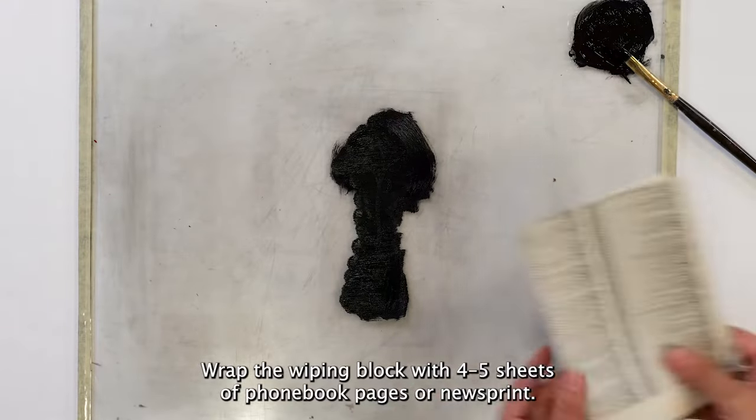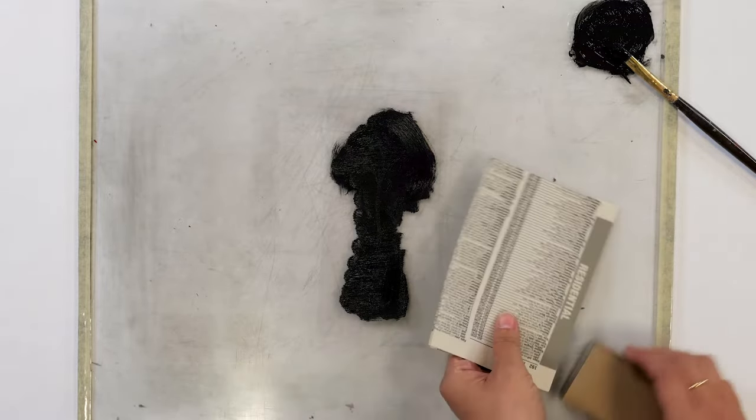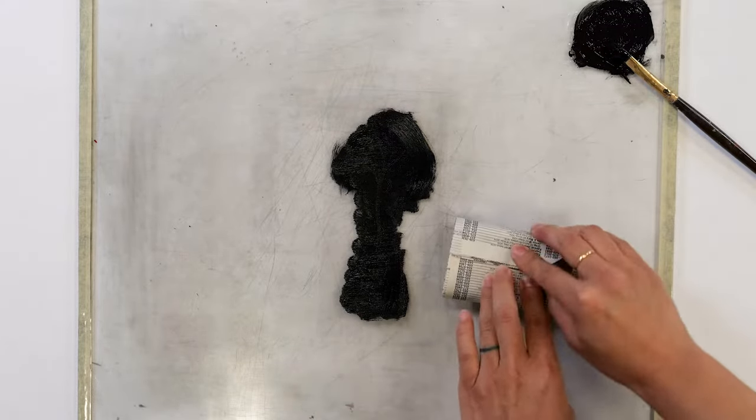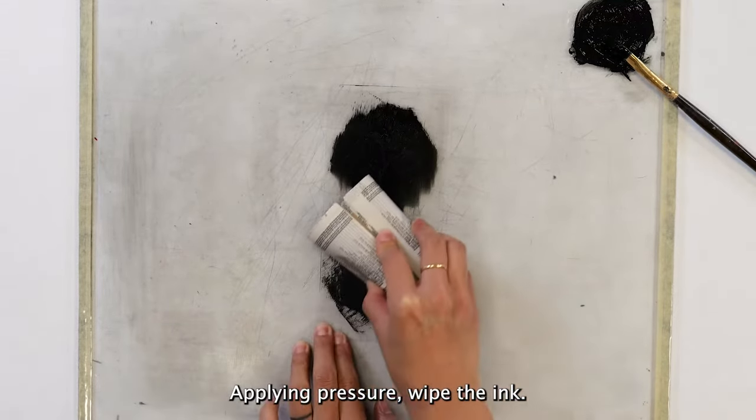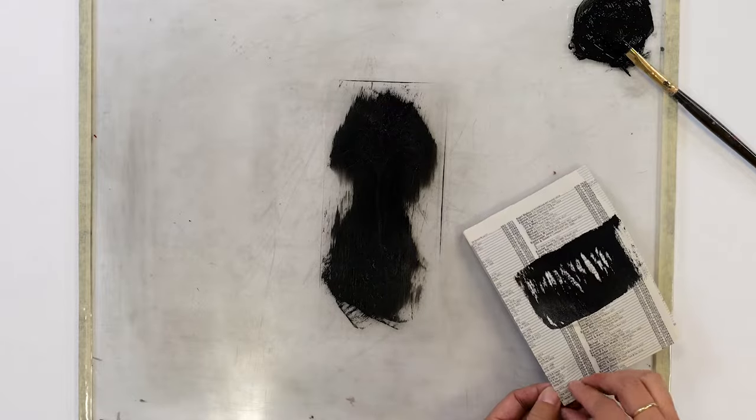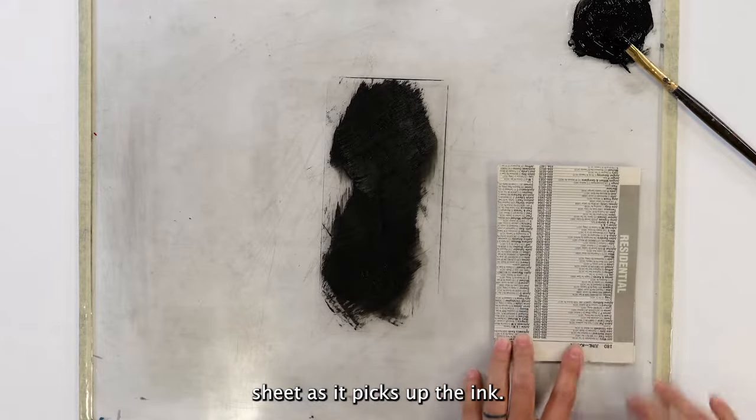Wrap the wiping block with 4 to 5 sheets of phonebook pages or newsprint. Applying pressure, wipe the ink. You'll need to keep changing to a clean phonebook or newsprint sheet as it picks up the ink.